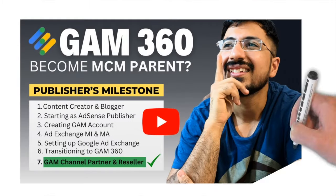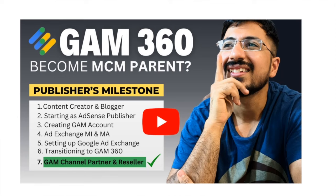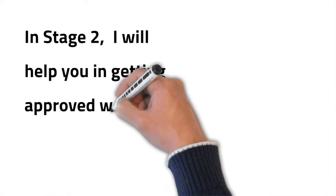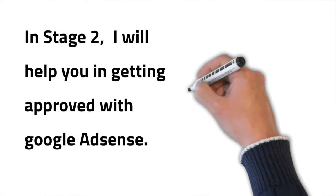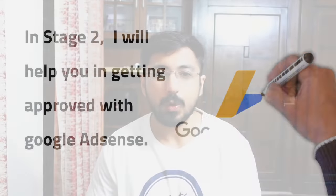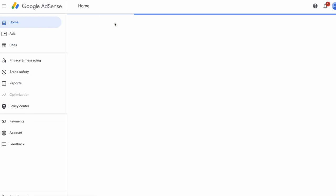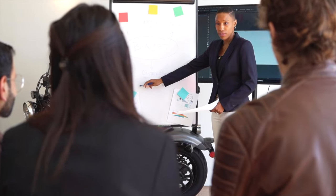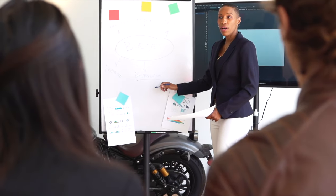Hello guys, this is Param here. Welcome to Stage Two of this special video tutorial series, wherein I guide publishers like you to eventually become GAM resellers. In this Stage Two, I'll help you get approved with Google AdSense. This is a relatively easy task, provided you have quality content. In this particular video tutorial, I'll be creating an AdSense account live in front of you and sharing the best tips essential for AdSense approval.